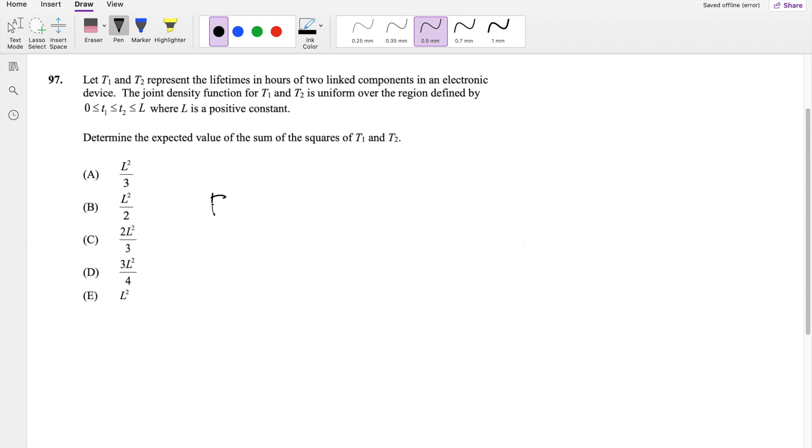So they say, determine the expected value of the sum of the squares. So it's T1 squared, the sum of the squares, right? Of T1 and T2. So this is what we're looking for.